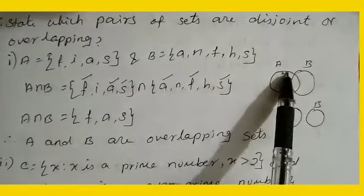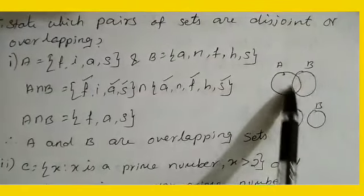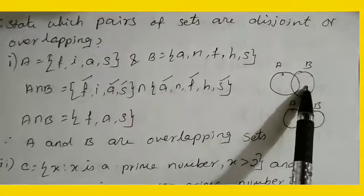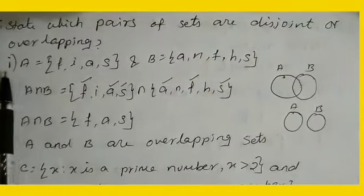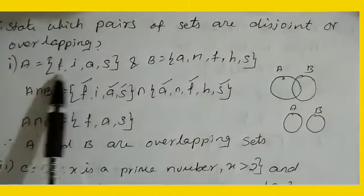Suppose we are taking A set and B set, means in between some common element is there, we are telling it is overlapping. For example, first sum: A = {f, i, a, s}